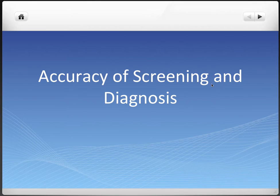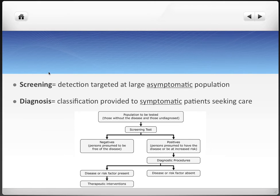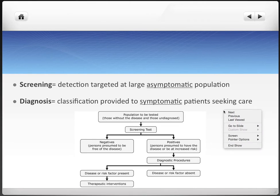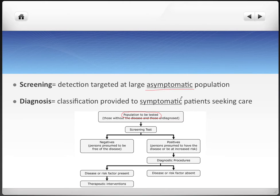Let's start with the accuracy of screening and diagnosis. It's important to differentiate between these two — there's a slight distinction. Screening is targeted at a large asymptomatic population and is mostly concerned with detecting disease. It's not as specific as diagnosis, because it's targeted at a larger population. Looking at this diagram, you start with a population, probably most of them asymptomatic, perhaps not knowing they have disease, and they undergo a screening.